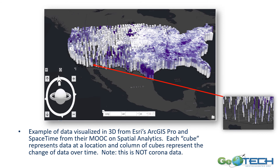This is a new map — it must be emphasized it's not on the COVID data. It is an example from ESRI's ArcGIS Pro Space Time MOOC on spatial analysis. Each stack of cubes represents the same location over time, with each cube being a different time frame. Someday maybe they will take all the data gathered during this pandemic and create a space-time visualization to really look at how things changed over time.